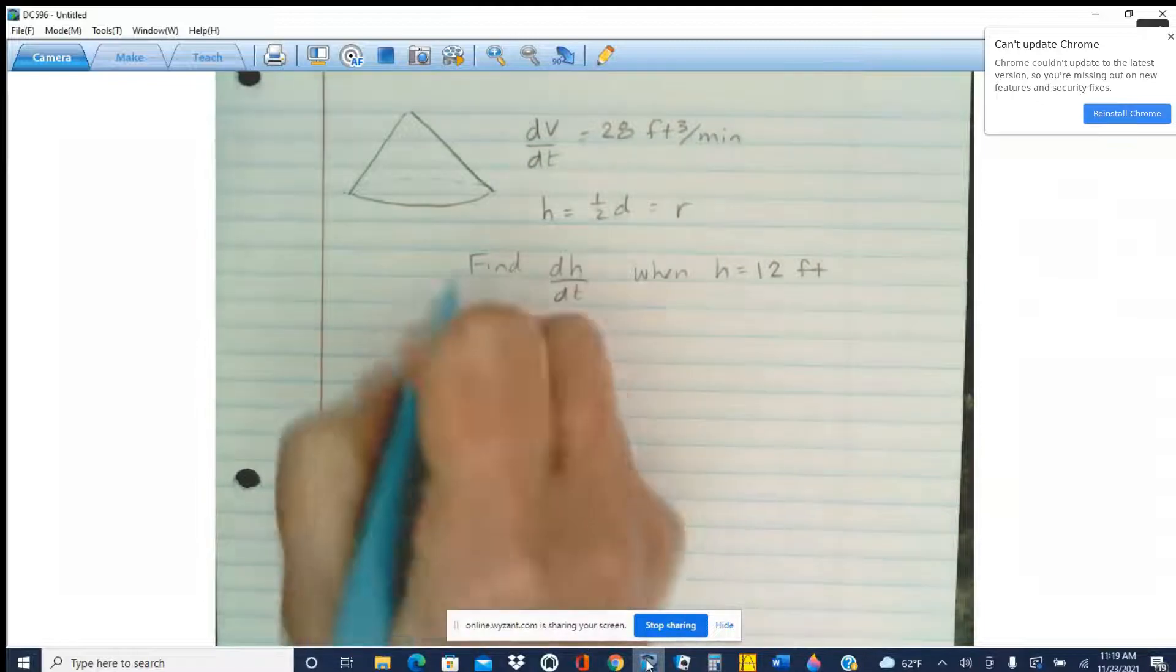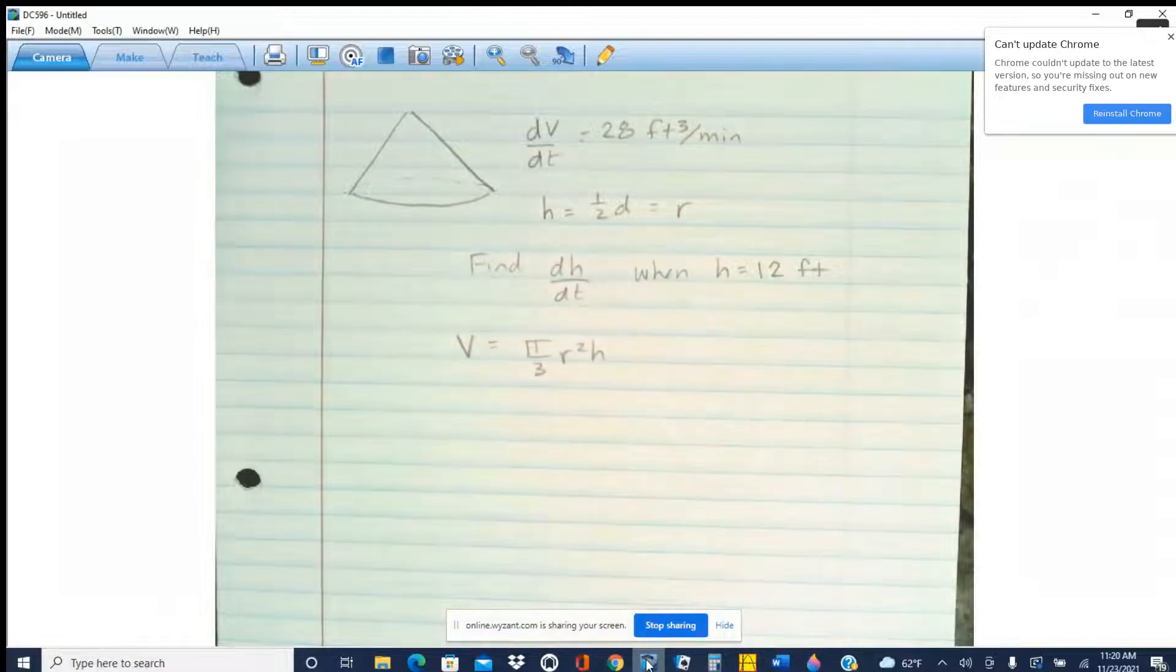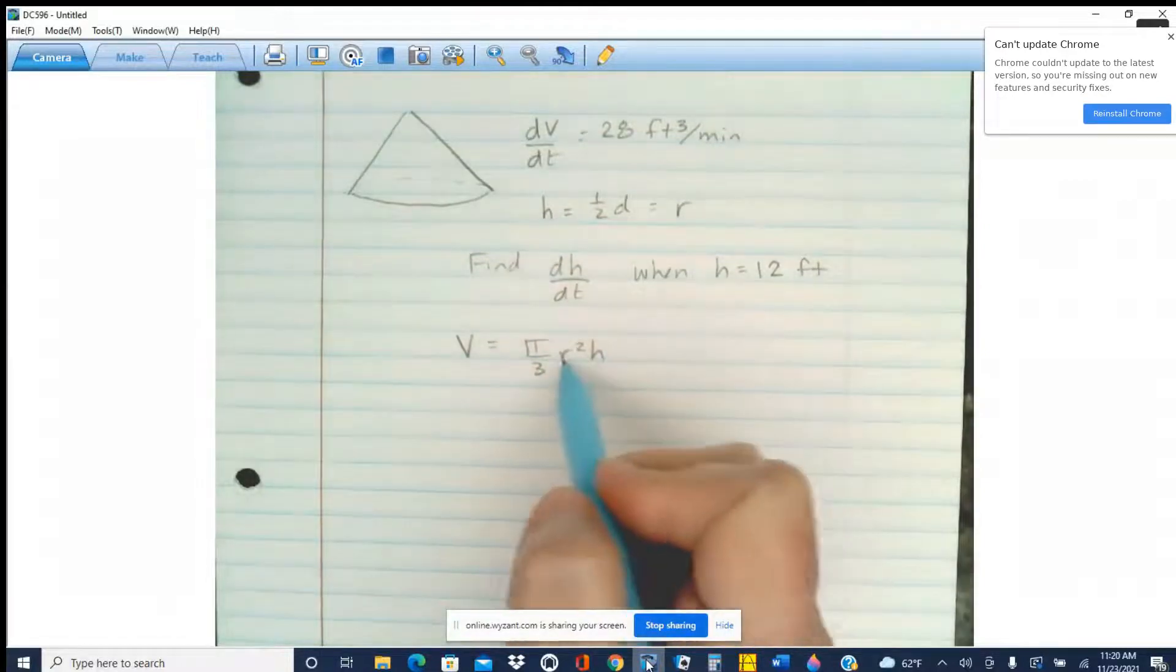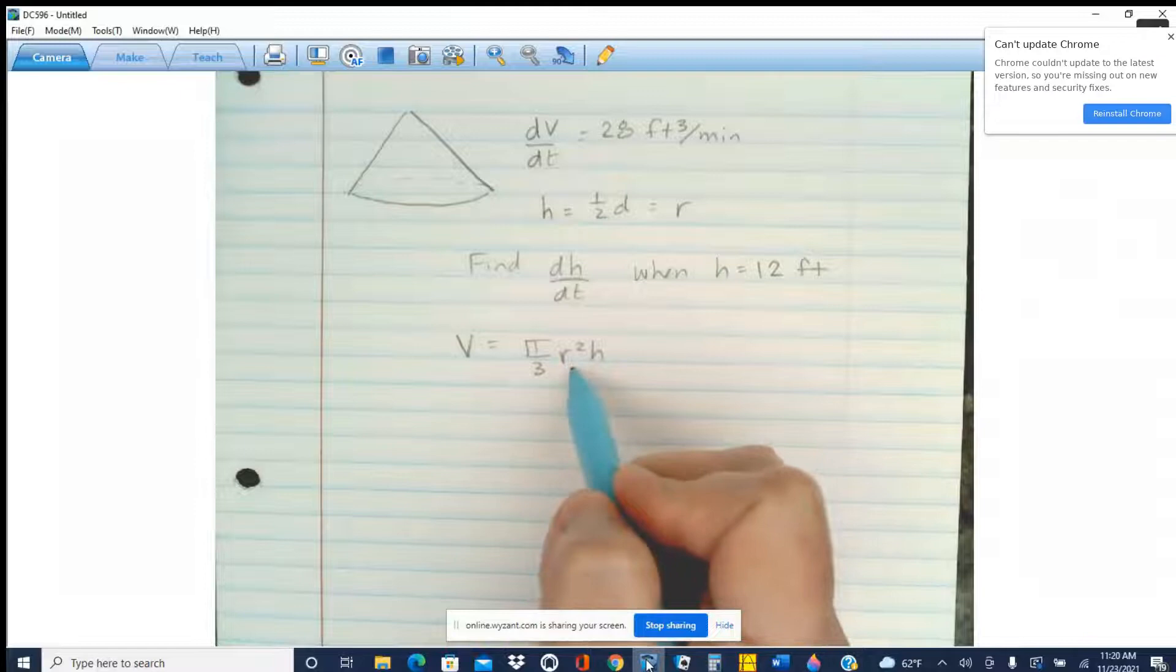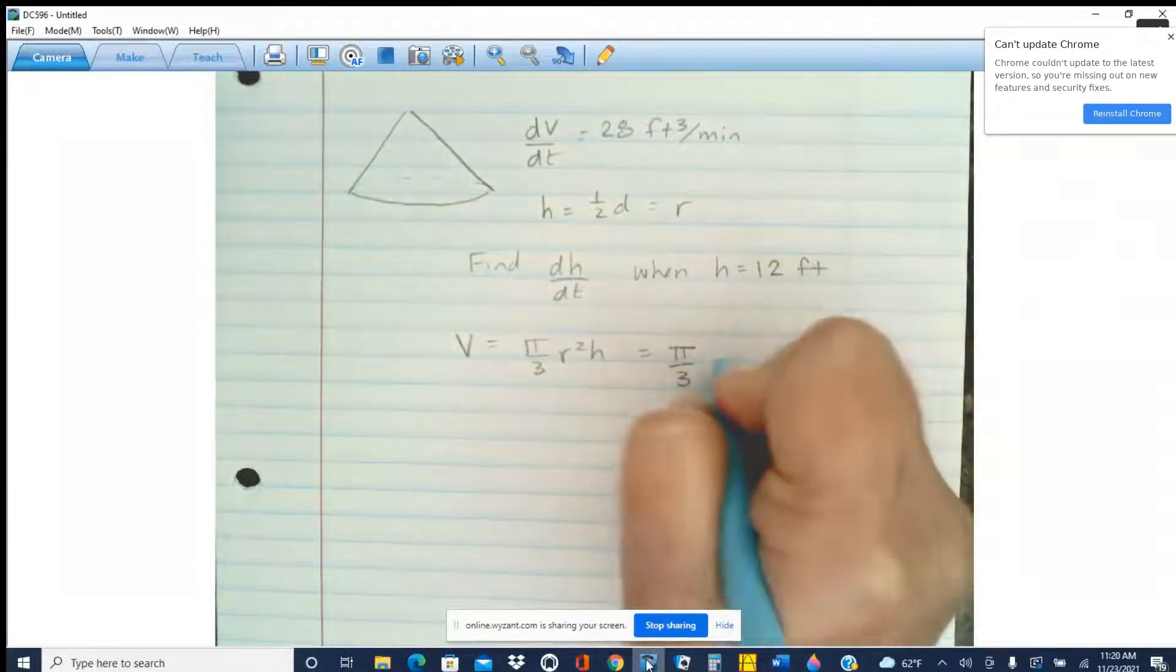We're going to start with the formula for the volume of a cone, and that's pi over 3 r squared h. But since r and h are the same, I can replace this r squared with h squared and get my function in one variable.